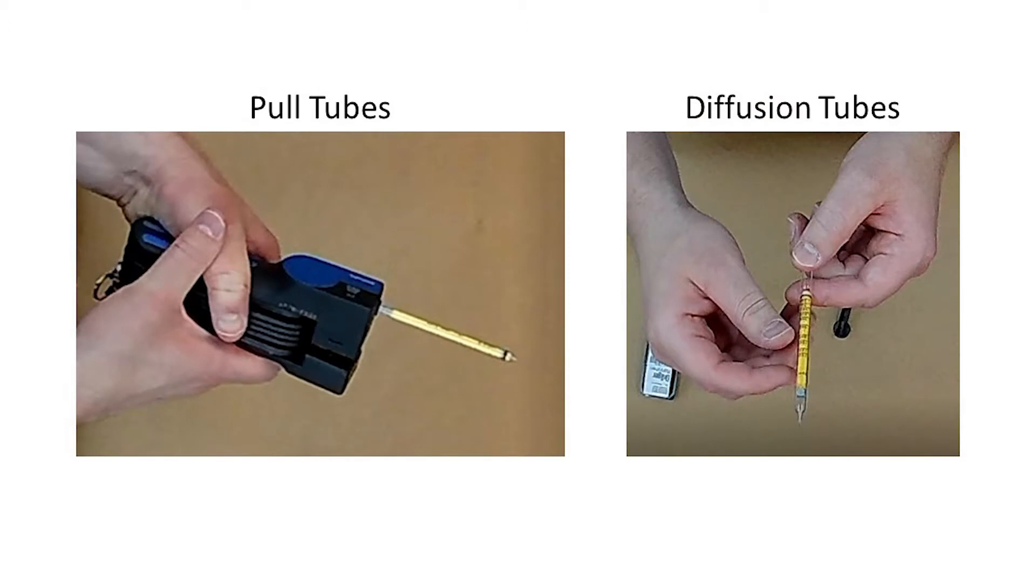There are two main types of colorimetric tubes, pull tubes and diffusion tubes. Pull tubes are a portable, quick, and relatively inexpensive way to detect ammonia gas levels.